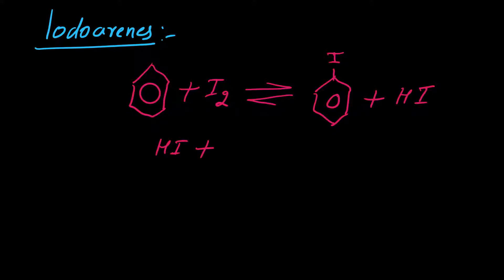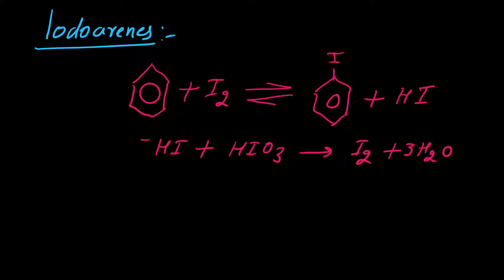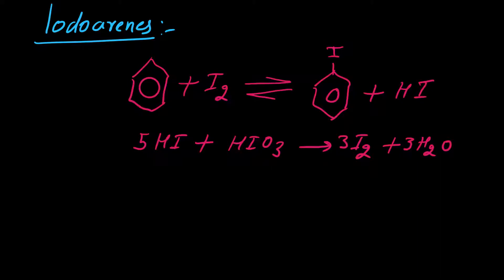Oxidizing agent जो HI को destroy कर देता है, जिसकी वजह से reaction reversible नहीं रहता। HI से iodine को liberate कर देता है और reaction forward direction में proceed कर जाता है। तो इस तरह से हम iodination balance कर देंगे — 3I2 use होगा। Iodobenzene की preparation थोड़ा difficult है क्योंकि reversible reaction होने की वजह से yield अच्छी नहीं आती।